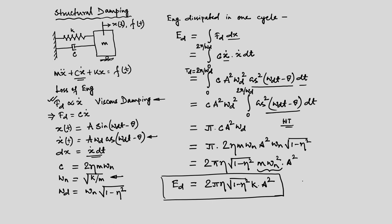The key point to note is that Ed is proportional to A². That is, the energy dissipated in one cycle is proportional to the amplitude squared — that is what the viscous damping model gives us.